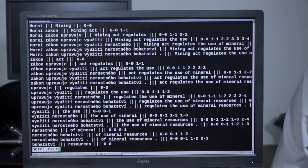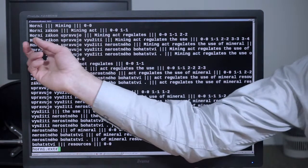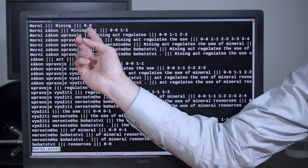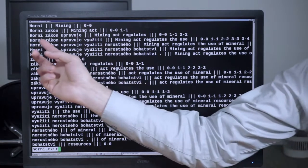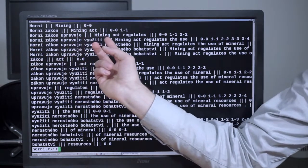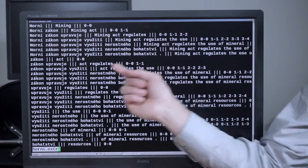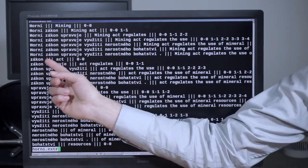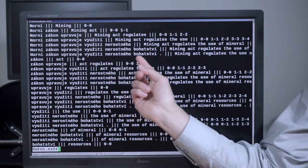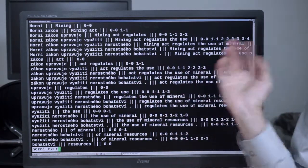These are all the extracted phrases. We know that horní zákon was translated as mining act in this sentence. That horní zákon upravuje was the beginning of the sentence. Mining act regulates and so on. And also the complete sentence. Horní zákon upravuje využití narostného bohatství, full stop, was here.